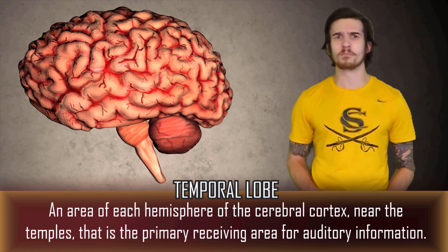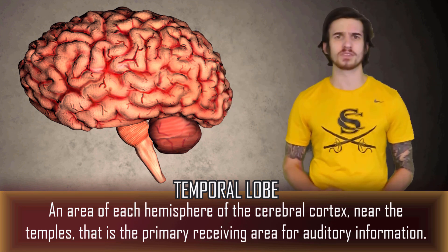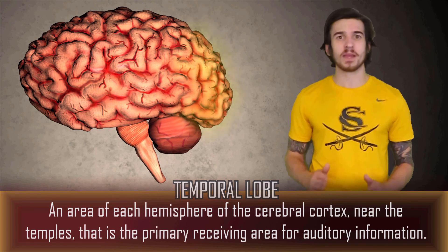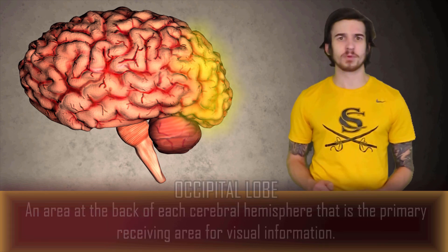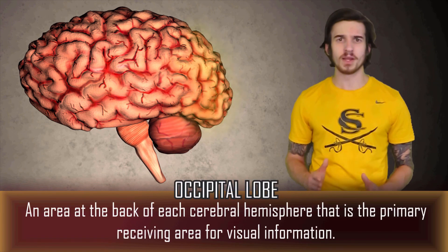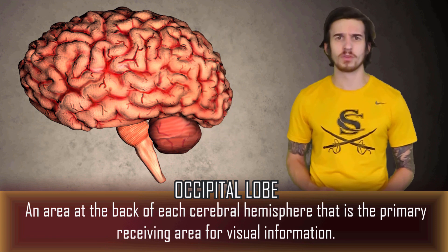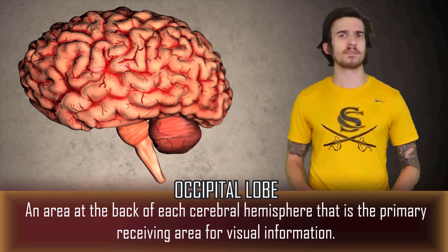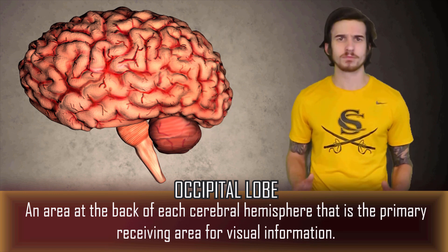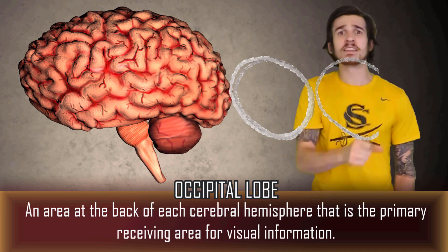Behind the temporal lobe, located in the back of the cerebral cortex, we have our occipital lobe. The main duty of the occipital lobe is to process visual information. When you forget what the function of the occipital lobe is, you just have to spell it out — O-C — ocular, vision.